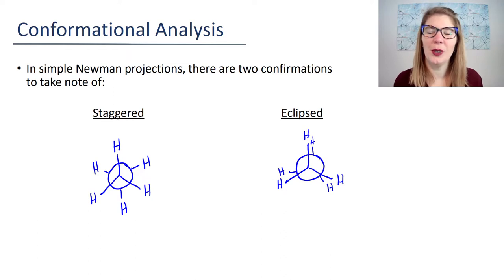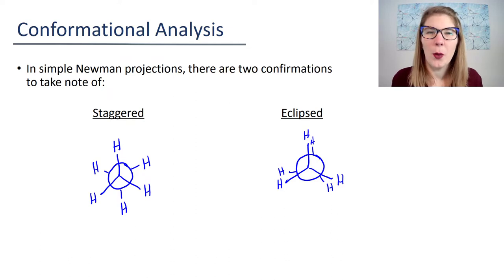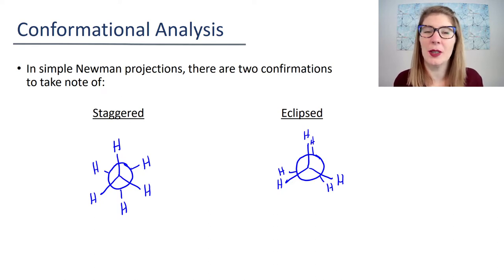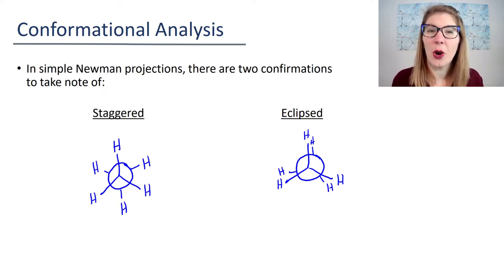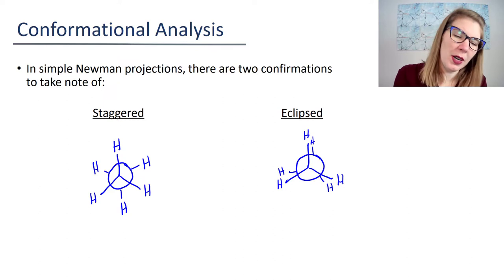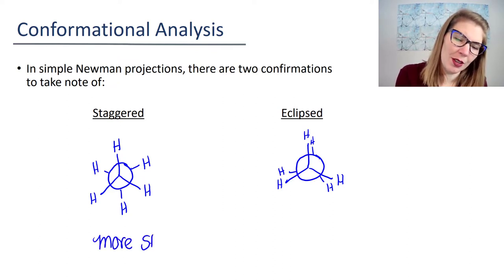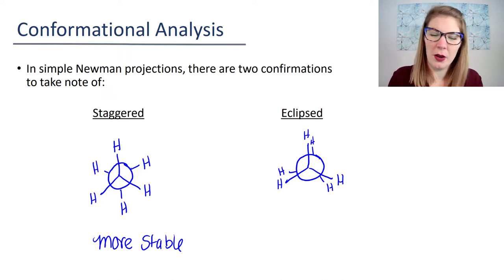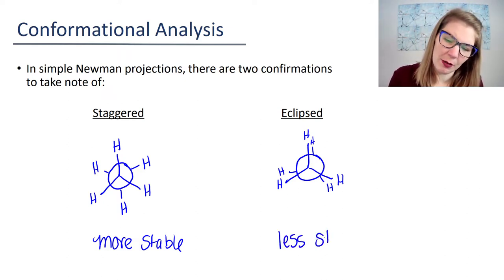Which one do you think is more stable—which situation happens most often? Hopefully you're saying the staggered, because those hydrogens have as much space as they can have. They're spaced out as best they can, which really decreases the amount of potential overlap from electron clouds. So the staggered conformation is going to be significantly more stable than the eclipsed conformation, where the hydrogens really line up and there's not enough space for them to spread out.